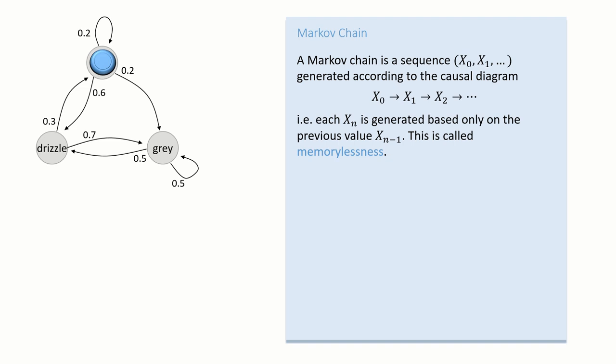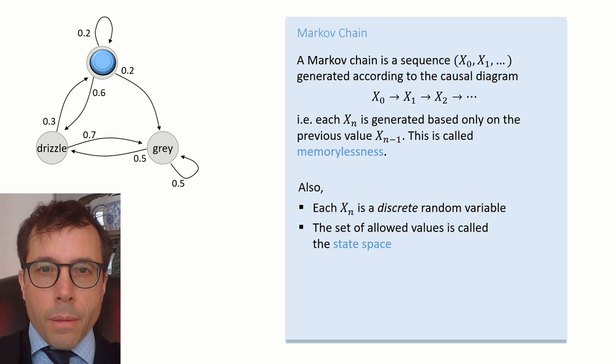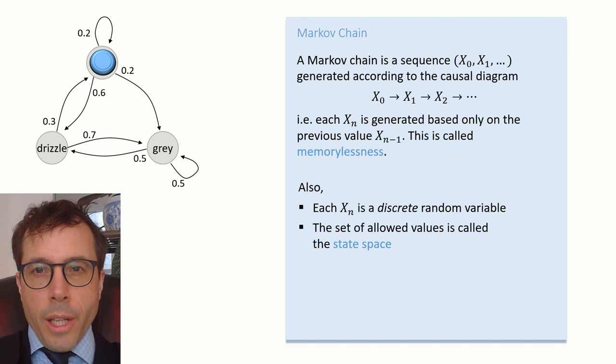A Markov chain is an infinite sequence x0, x1... generated according to a linear causal diagram, i.e. generated memorylessly. There are also some restrictions we'll usually make. We'll assume that each xn is a discrete random variable and the set of allowed values is called the state space of the Markov chain.